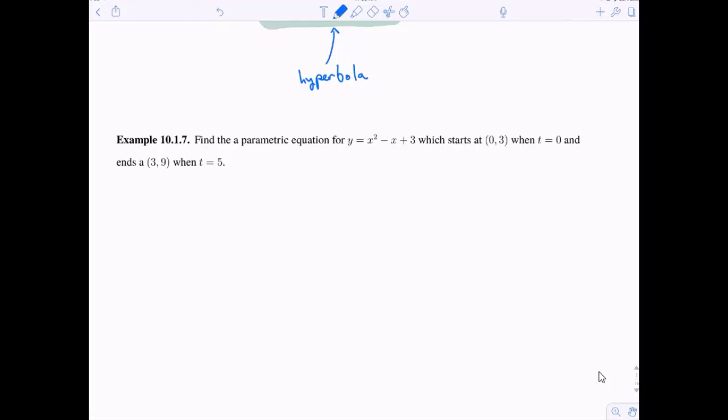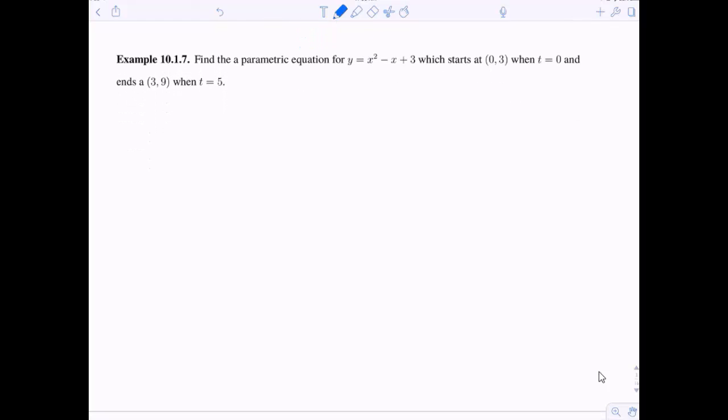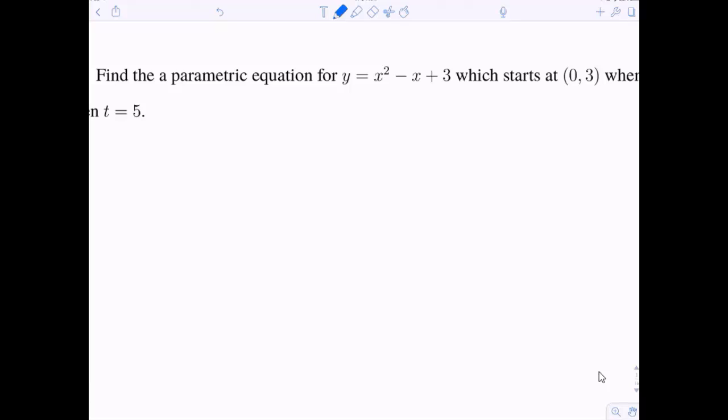We have one more example. Parametric equation with y equals x squared minus x plus 3 which starts at 0, 3 when t equals 0 and ends at 3, 9 when t equals 5. This is interesting because we're given the Cartesian equation and asked to find a parametric equation that satisfies a few conditions. We already have y as a function of x. So in order to get y as a function of t, we just need to parametrize x. Once we have a parameter for x, we can just plug that into this equation.